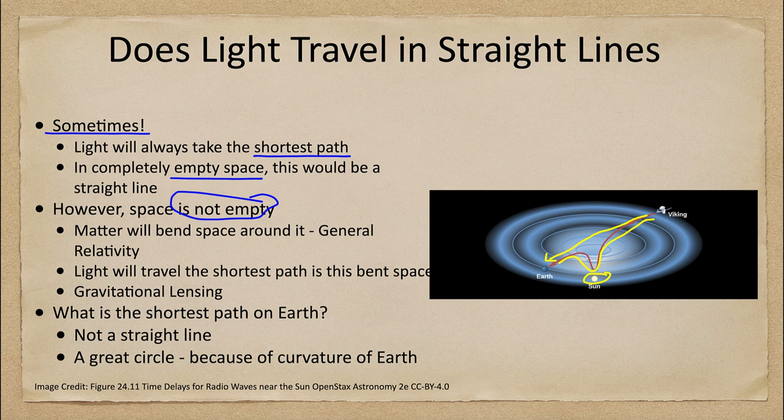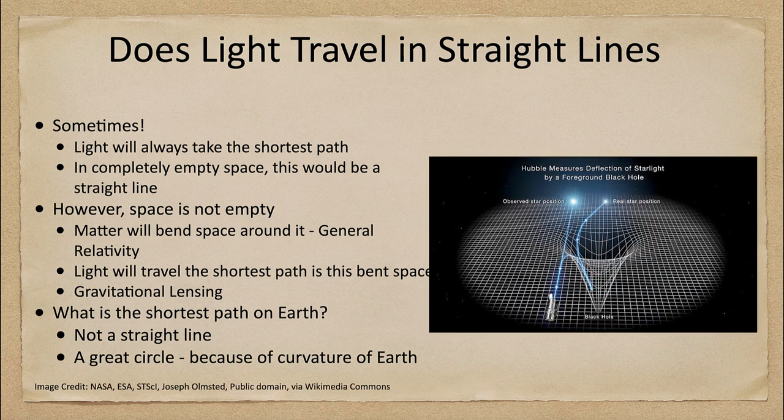Light will always travel through that shortest path it can in space. What does that mean? Well, we can look at another example of how that works, because we get things like gravitational lensing.